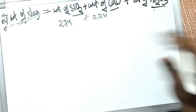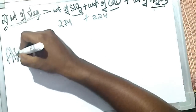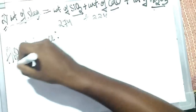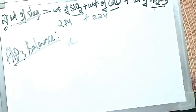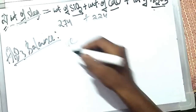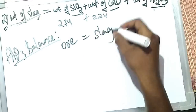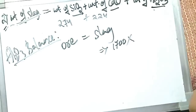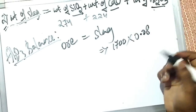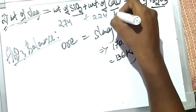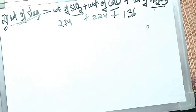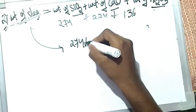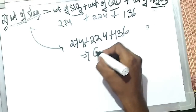For the Al₂O₃ balance: Al₂O₃ undergoes no reaction, so whatever enters in the ore goes directly into the slag. Al₂O₃ in slag = 1700 × 0.08 = 136 kg. The total weight of slag is the sum of all three: 274 + 224 + 136 = 634 kg.